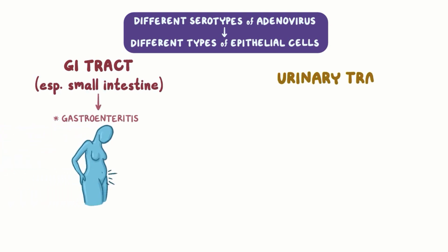Other serotypes prefer the urinary tract, resulting in hemorrhagic cystitis or inflammation of the bladder associated with bloody urine.